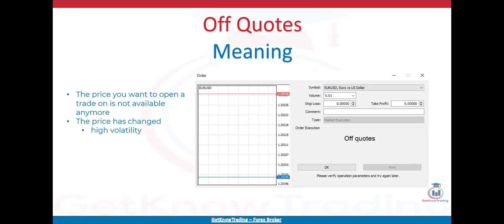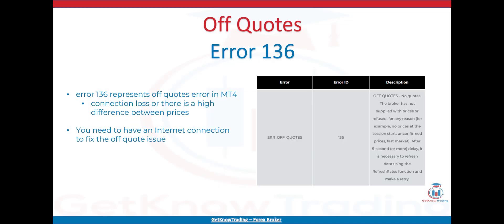Let me explain these errors with examples. Here is the error code table with error ID and error description. The off quotes error has error ID 136, and the description says 'no quotes' — the broker has not supplied prices or refused for any reason, for example no prices at the session start, unconfirmed prices, or a fast market. After a 5-second or more delay, it is necessary to refresh data using the RefreshRates function and make a retry. This RefreshRates function is used in Expert Advisors if you are programming a trading robot.